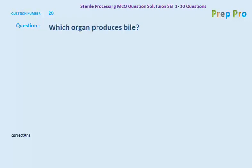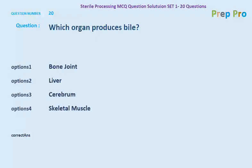Question number twenty: which organ produces bile? The options are bone, joint, liver, cerebrum, and skeletal muscles. The correct option is liver. That brings us to the end of this question set. We look forward to having you on the next question set, which will also have 20 questions. Thank you very much for staying with Prep Pro.